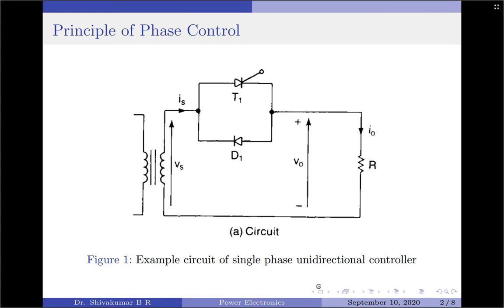In the positive half cycle of the input supply, the thyristor T1 is forward biased and will conduct when a gating signal is provided to it. When the thyristor starts conducting, the output will follow the input for the rest of the half cycle. In this period, control across the output voltage is achieved by triggering the thyristor at some angle alpha.